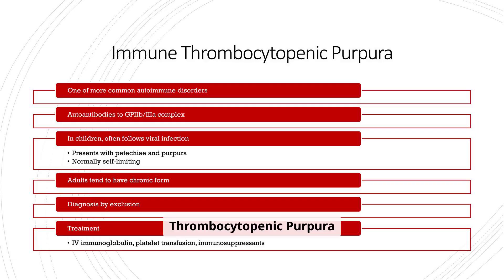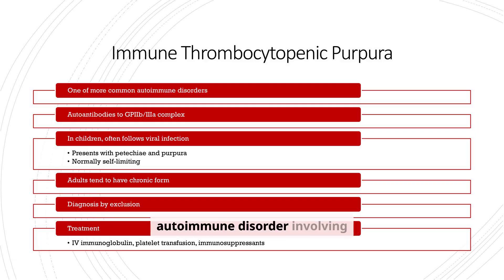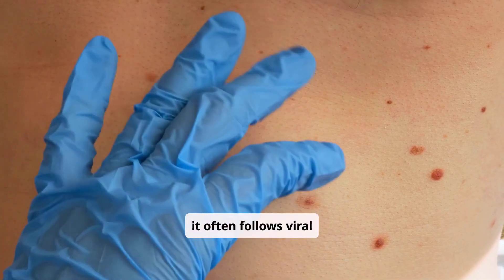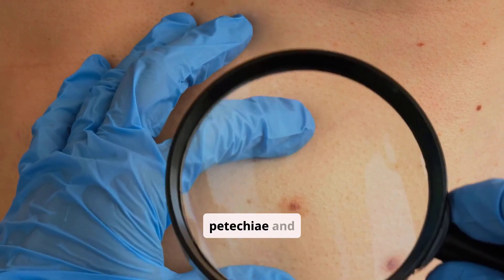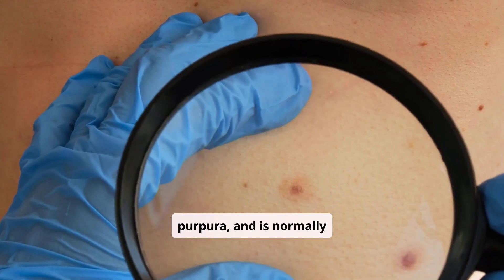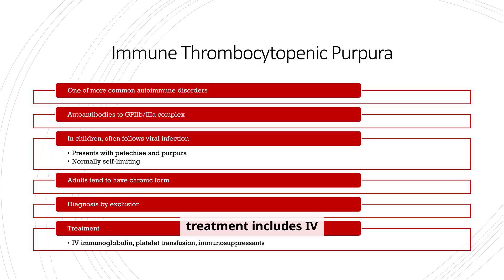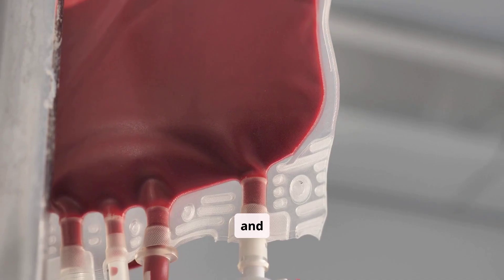Immune thrombocytopenic purpura (ITP) is a common autoimmune disorder involving autoantibodies to the GPIIb/IIIa complex. In children, it often follows viral infection and presents with petechiae and purpura, and is normally self-limiting. Adults tend to have a chronic form. Diagnosis is by exclusion, and treatment includes IV immunoglobulin, platelet transfusion, and immunosuppressants.